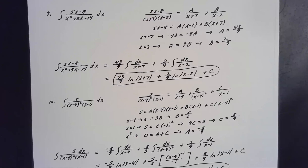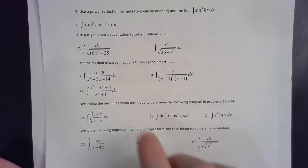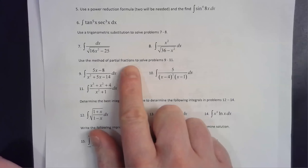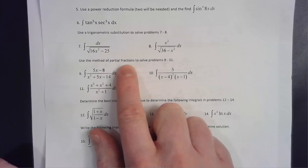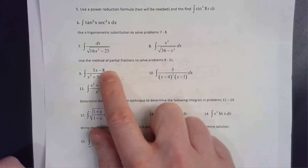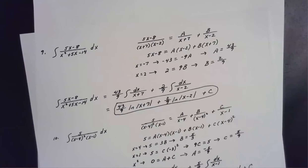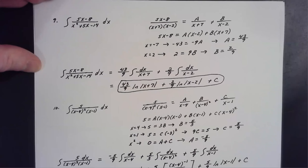Let's take a look at the remaining problems on our practice test three, starting with number nine. Keep in mind that numbers nine through eleven are all method of partial fractions. While there may be other alternative methods to solve them, I need to see the method of partial fractions on all three of these problems — that's what we learned in section 7.5 of the book.